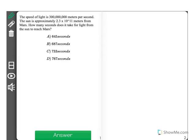The speed of light is 300 million meters per second. The sun is approximately 2.3 times 10 to the 11th meters from Mars. How many seconds does it take for light from the sun to reach Mars?